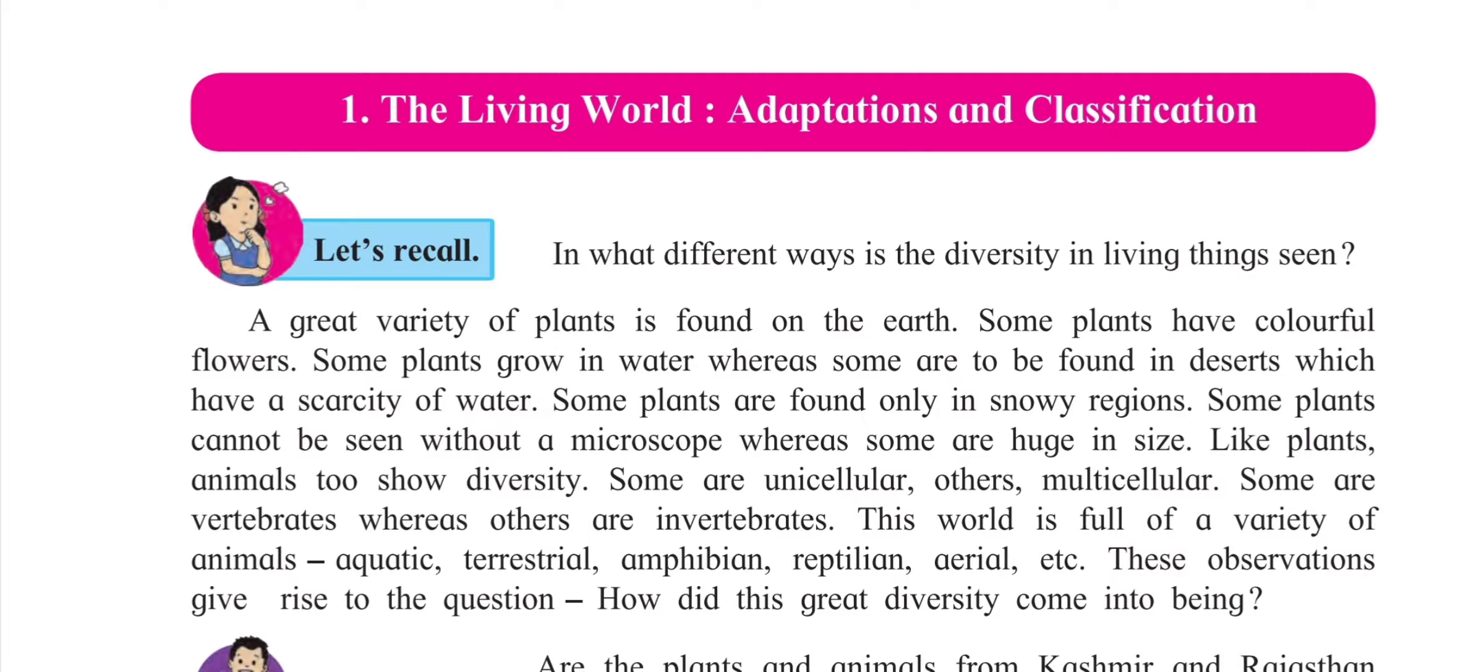In this lesson, we have come to know different types of plants and different types of animals. Plants and animals live in different areas in different regions. Some live in desert, some live in water, some live in snowy region, some live in forest.